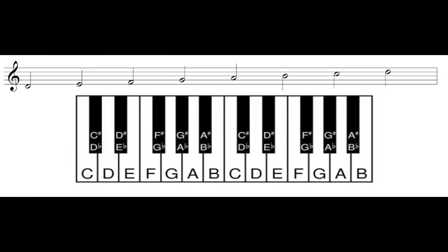Now that we have a basic understanding of whole and half steps, we can start using them to construct some of the most common scales in western music. We'll start by building a D major scale. The first step is to draw the starting note on staff paper. I drew that D, then filled out a note on every line and space up the scale back to D — one D, E, F, G, A, B, C, and another D at the top. Every major scale is going to have one of each letter note name in it, so this is always a good place to start.